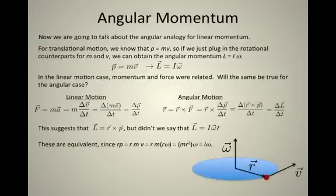Well it turns out they are. They're equivalent, since R times p is equal to Rmv, which is equal to Rm times Rω. Remember that velocity, linear velocity, is related to angular speed by the product Rω = v.